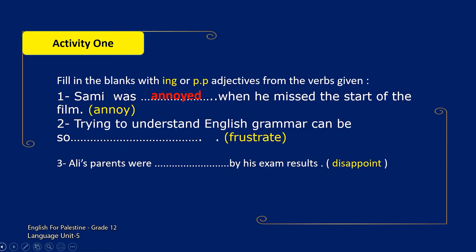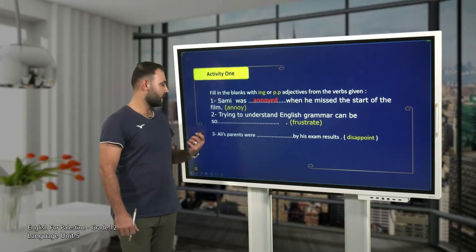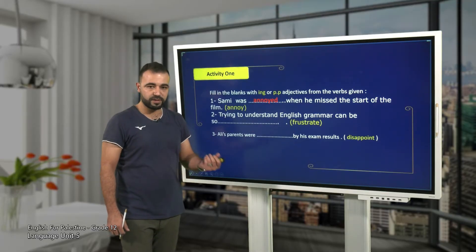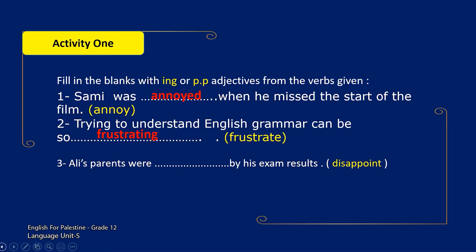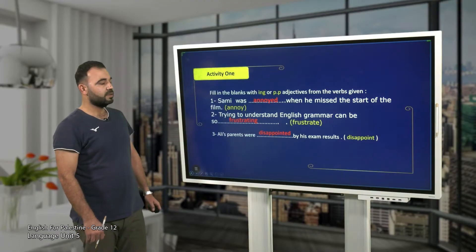What do you think — was Sammy annoying or annoyed? The right answer is: Sammy was annoyed. He feels it, he doesn't cause it. Number two: trying to understand English grammar can be so — frustrate — what do you think? Can be so frustrated or frustrating? Good job — it can be frustrating; it causes the feeling. Sentence number three: Ali's parents were disappointed by his exam results.